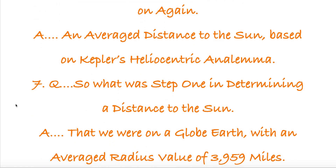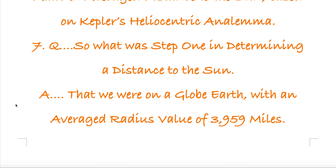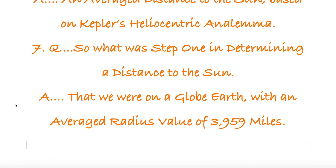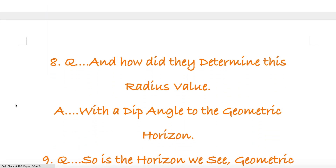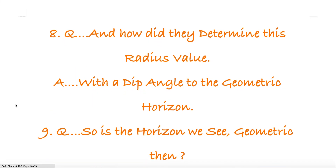So what was step 1 in determining the distance to the Sun? That we were on a globe Earth with an average radius value of 3959 miles. And how did they determine this radius value? With a dip angle to the geometric horizon.